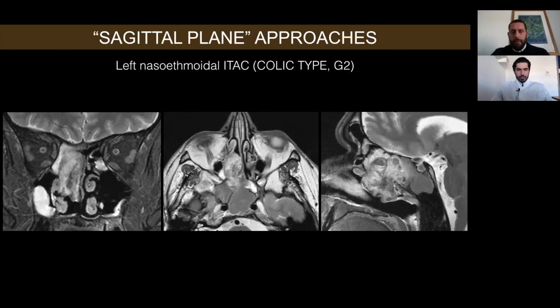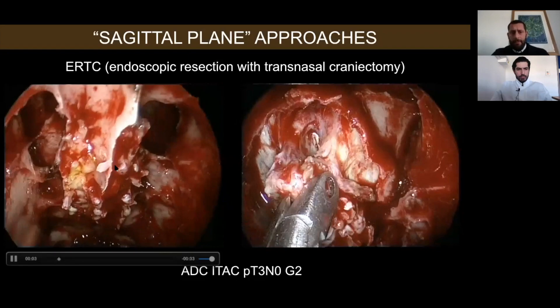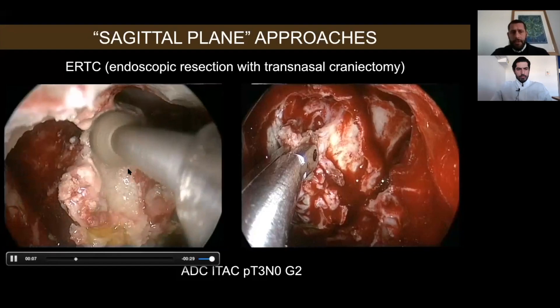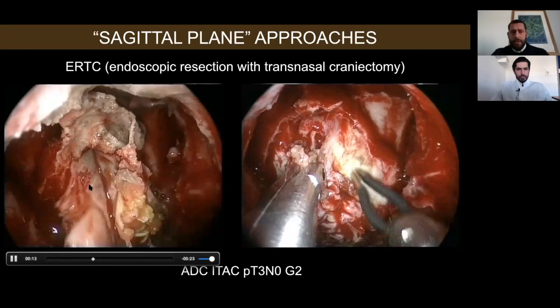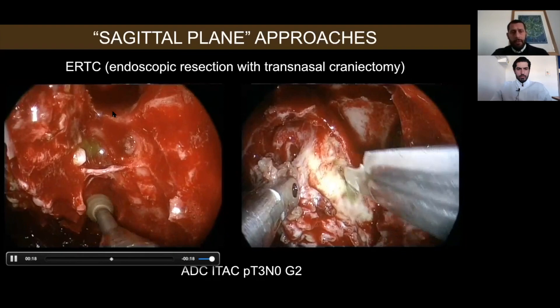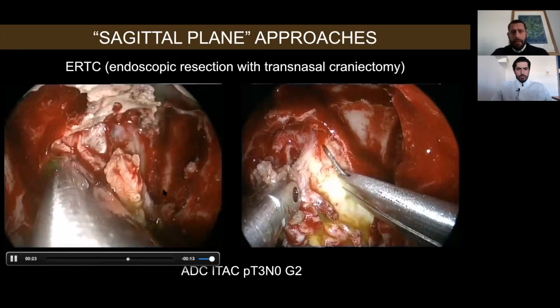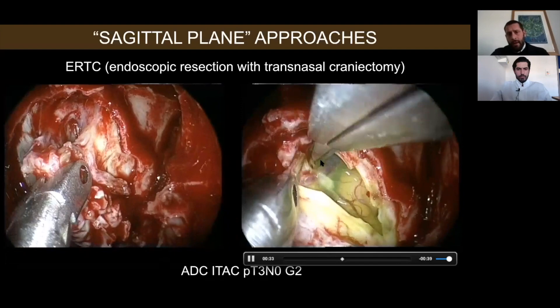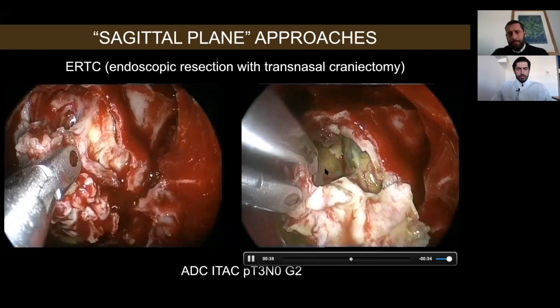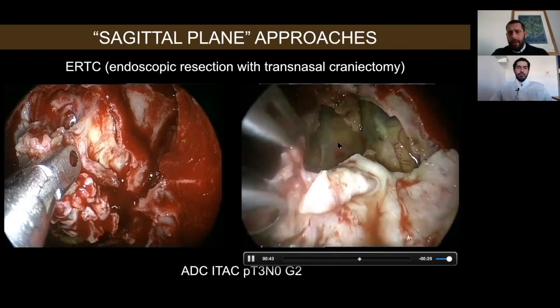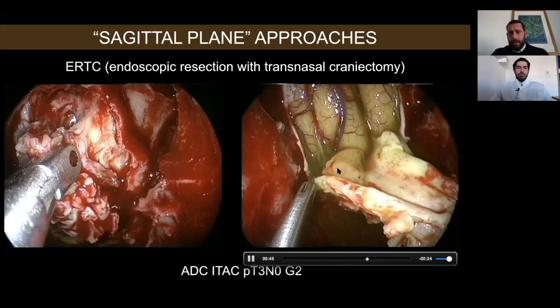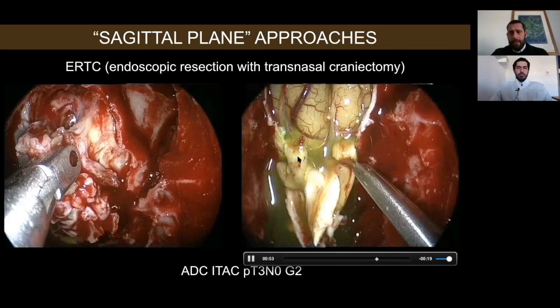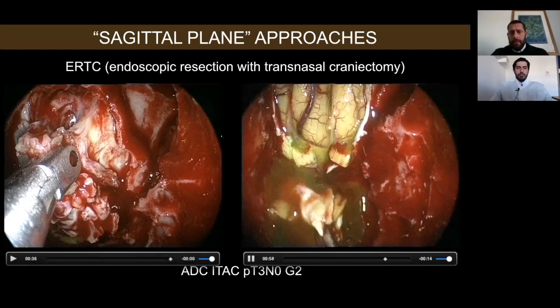This is an example of application of the transcribriform approach for intestinal-type adenocarcinoma of the right nasal fossa. The tumor was already removed from the nose, but to reach free margins we also had to remove the skull base. We are preparing the skull base, cutting the ethmoid arteries bilaterally, removing the bone, and detaching the dura from the surrounding bone. Very carefully, we open the dura — remember the arachnoid is very adherent to branches of the medial orbital frontal artery, so you must carefully dissect it to avoid dangerous bleeding. We then cut the olfactory tracts bilaterally so the olfactory bulbs are both included in the specimen.